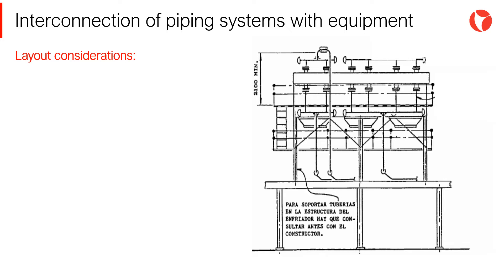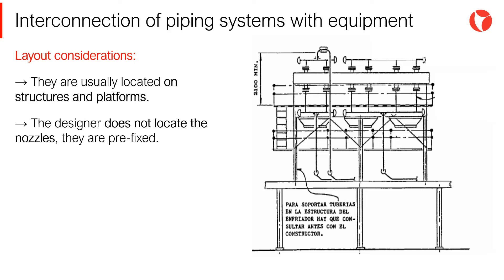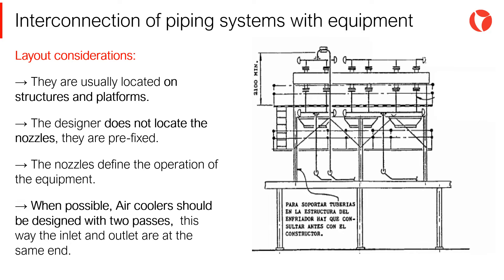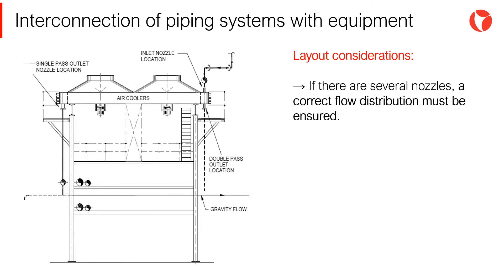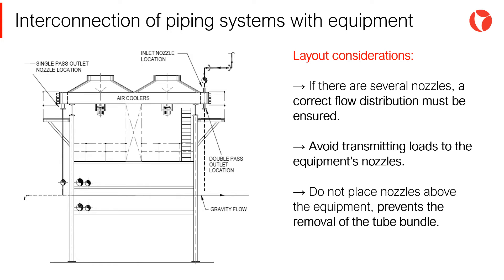The main layout considerations for air coolers are: they are usually located on structures or platforms. The designer does not locate the nozzles — they are prefixed. The nozzles define the operation of the equipment. When possible, air coolers should be designed with two passes, so that the inlet and outlet nozzles are at the same end. If there are several nozzles, a correct flow distribution must be ensured. Avoid transmitting loads to the equipment's nozzles, and do not place nozzles above the equipment so as to prevent the removal of the tube bundle.